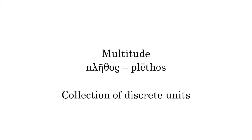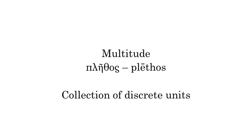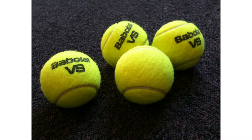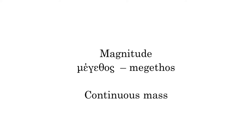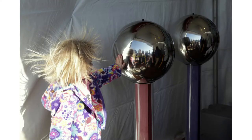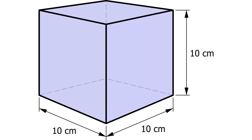A multitude, plethos in Greek, is a quantity of countable things like soldiers or tennis balls. A magnitude, megathos in Greek, is a continuous quantity that does not naturally divide into individual countable objects. Think of water or electrical charge. We can only measure it, and we do this by deciding on a quantity to serve as a referential magnitude, which we call our unit. So we measure a mass of water in terms of liters or electrical charge in amperes.